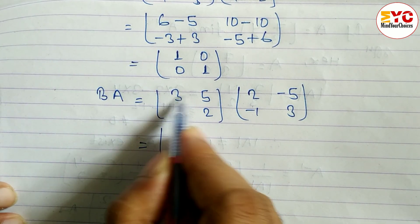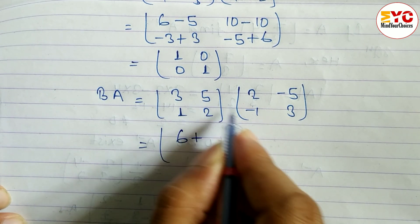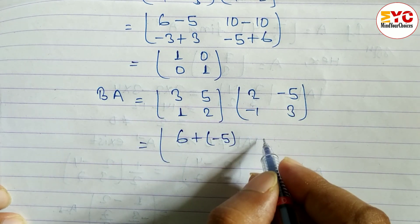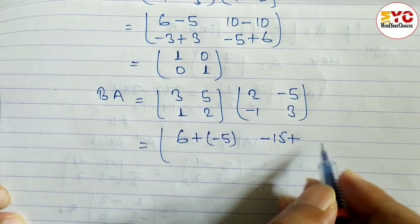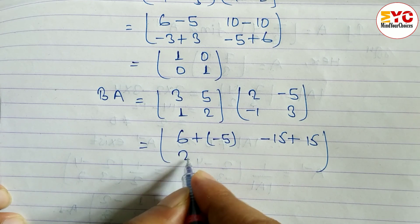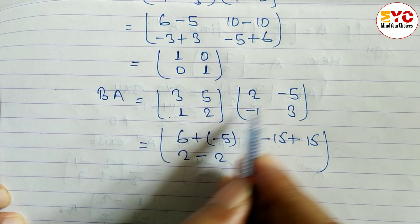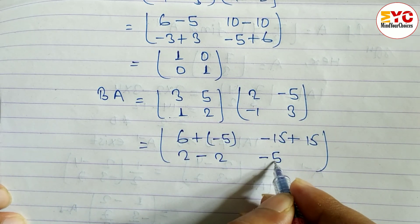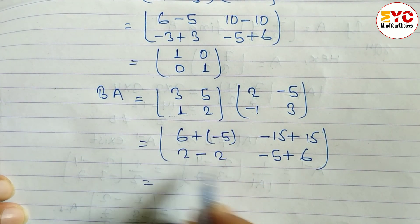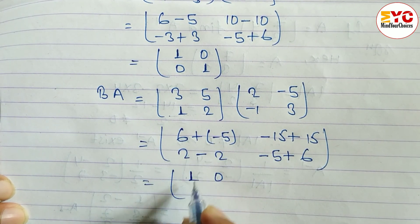First row, first column: 3×2 = 6 plus 5×(-1) = -5. First row, second column: 3×(-5) = -15 plus 5×3 = 15. Second row, first column: 1×2 = 2 plus 2×(-1) = -2. Solving this: 6 minus 5 = 1, we get 0, 2 minus 2 = 0.